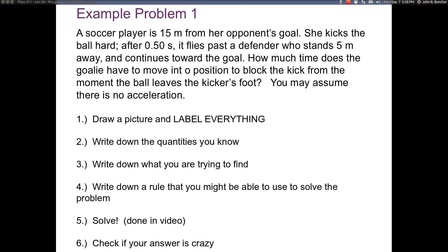So we've got some steps here that outline the process that we're going to want to follow for mostly every problem. The first and most important one is to draw a picture and to label everything. Then we're going to want to write down the quantities we know, what we're trying to find, we're going to try and think of a rule that we might be able to use to solve the question, and then we'll solve. And then at the end we want to check if our answer is crazy.